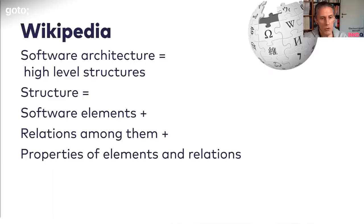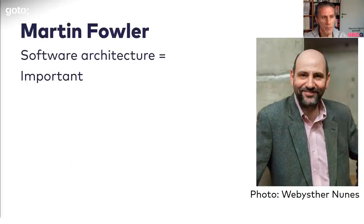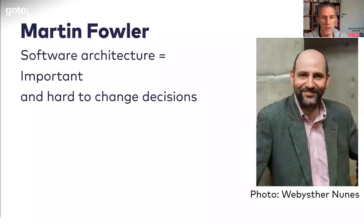Martin Fowler said that software architecture consists of the important and hard-to-change decisions. That's another take on software architecture, but it doesn't really talk about architecture structure either.